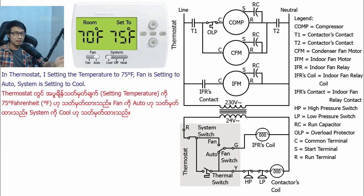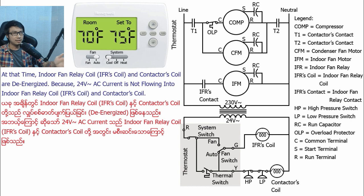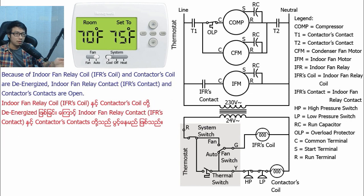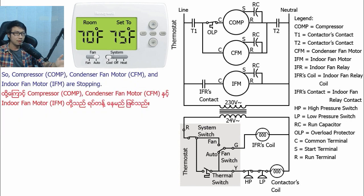In the thermostat, I set the temperature to 75 degrees Fahrenheit, fan is set to auto, and system is set to cool. In the wiring diagram, you will see the system switch is closed for cool, but the thermal switch in the thermostat is open because our set temperature is higher than room temperature. At that time, the indoor fan relay coil and contactor coil are de-energized because 24V AC current is not flowing into them, so the indoor fan relay contact and contactor contacts are open. Line and neutral current is not flowing into the compressor, condenser fan motor, and indoor fan motor, so they are all stopped.